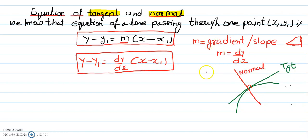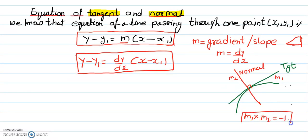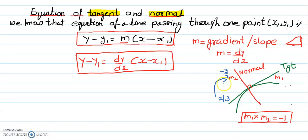We know one rule: if gradient of tangent is m1 and gradient of normal is m2, if you multiply them, they have the relationship m1 times m2 equals minus 1. In other words, if tangent has a gradient of 2 over 3, then the gradient of the normal will be the negative reciprocal, which is minus 3 over 2. If you multiply minus 3 over 2 and 2 over 3, you get minus 1.